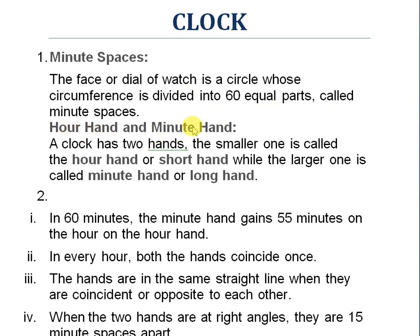A clock has two hands. The smaller one is called the hour hand or short hand, while the larger one is called the minute hand or long hand. When you see a clock, there are two moving pins in circular motion — one short and one larger. The short one is the hour hand and the larger one is the minute hand.